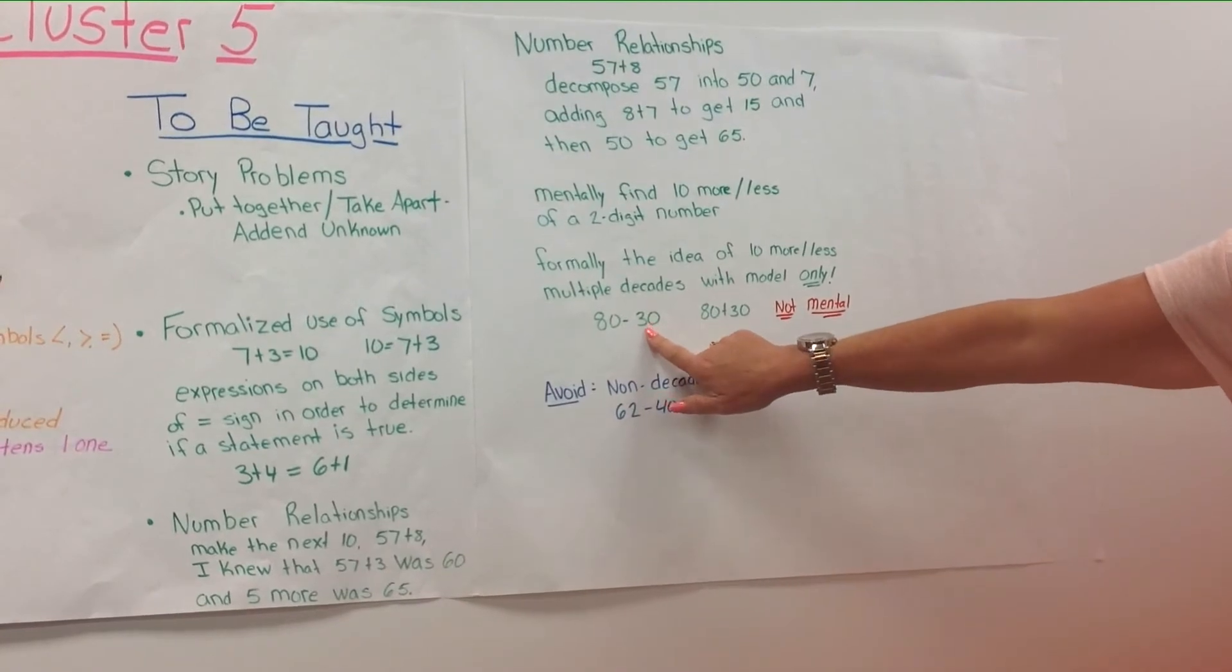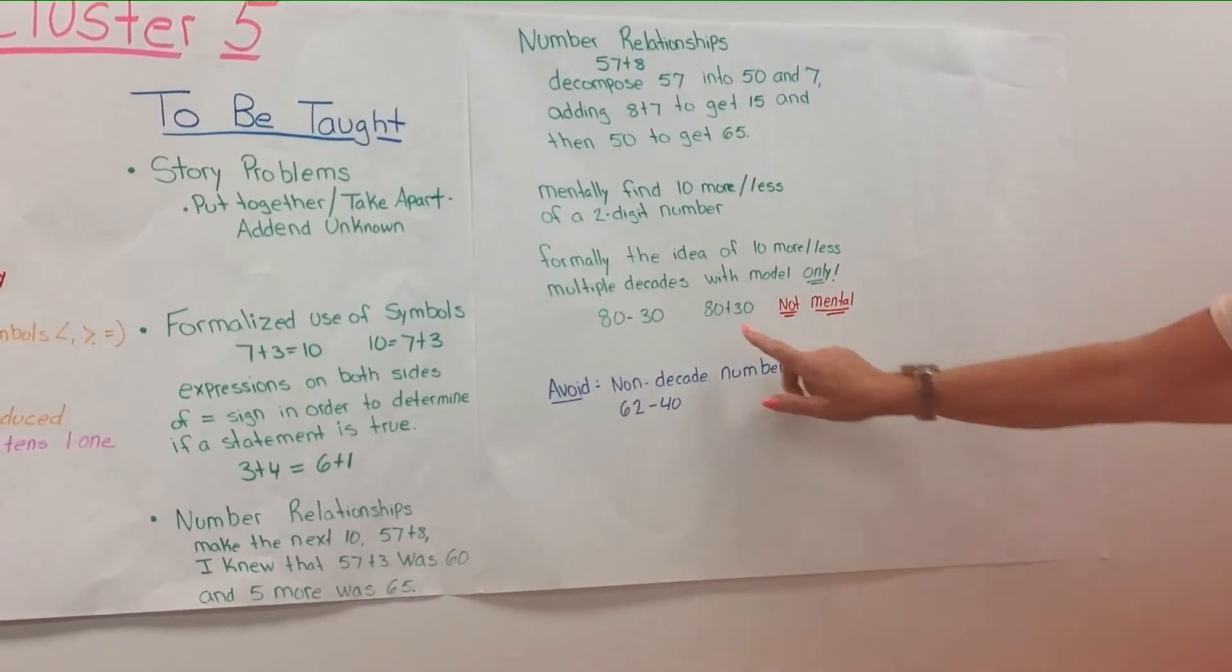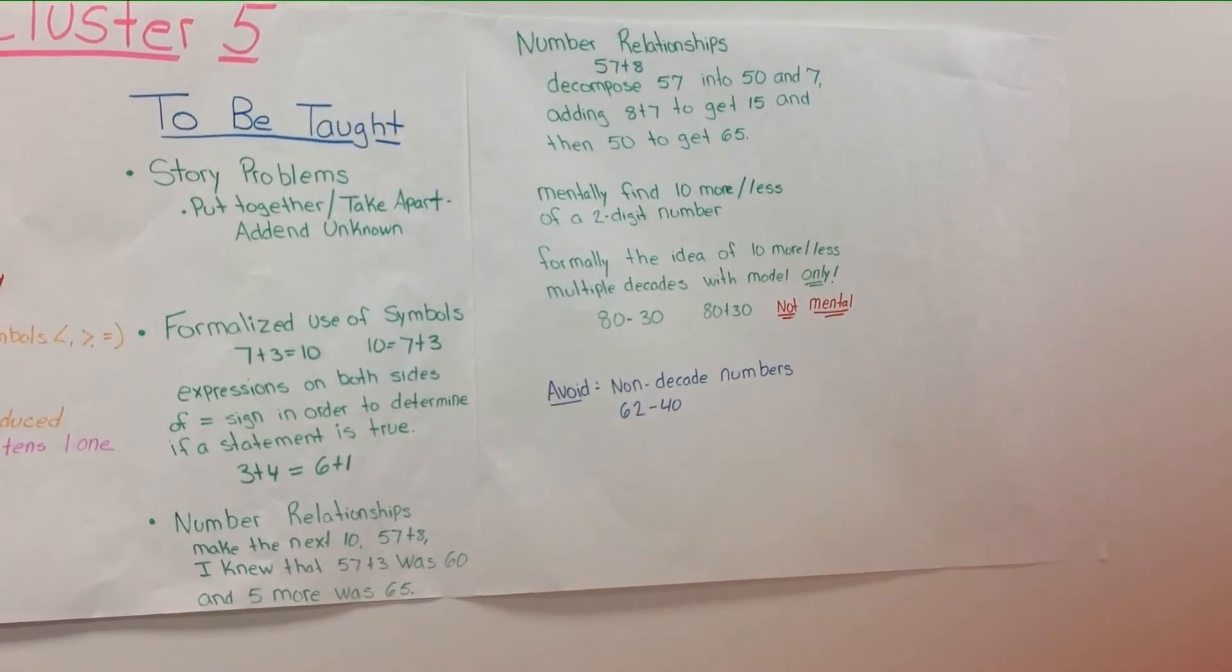80 minus 30 instead of 10 would be modeling only, or 80 plus 30. This would not be considered mental math.